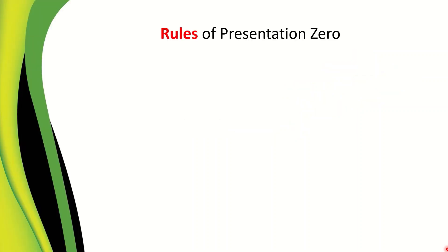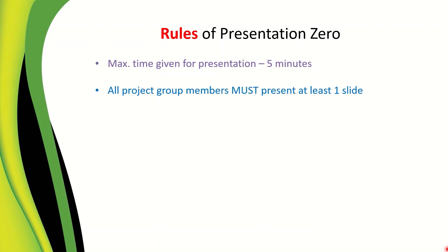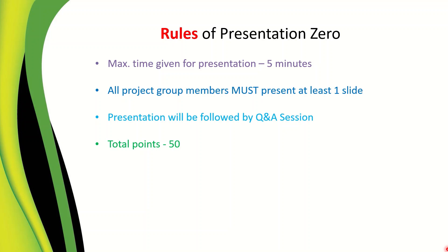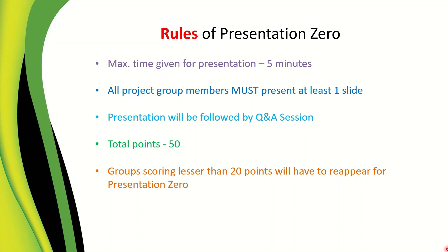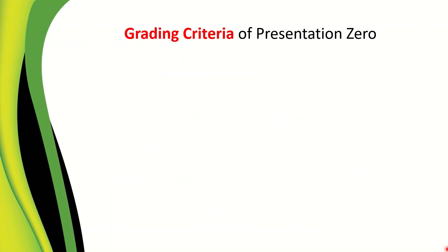Now let us move on to the rules of Presentation 0 that must be followed. The maximum time given for your presentation is five minutes, and all group members must present at least one slide. Presentation 0 will be followed by a question and answer session. The total points allotted to Presentation 0 is 50 points, and groups scoring fewer than 20 points will not be allotted a guide or supervisor immediately — they will have to reappear for Presentation 0 again. I'll give the breakdown of the 50 points in the next slide on grading criteria.